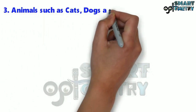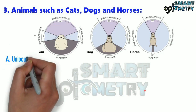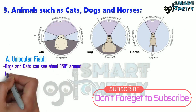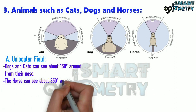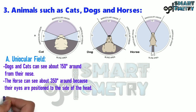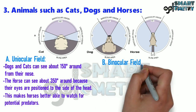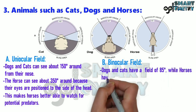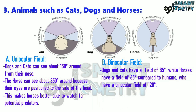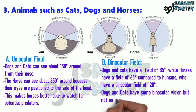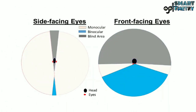Animals such as cats, dogs, and horses: Dogs and cats can see about 150 degrees around from their nose, while the horse can see about 350 degrees because its eyes are positioned to the side of the head, making horses better able to watch for predators. For the binocular field, dogs and cats have a field of 85 degrees while horses have 65 degrees, compared to humans who have a binocular field of 120 degrees. Dogs and cats have some binocular vision but not as much as humans. This picture compares the monocular and binocular visual fields of animals with side-facing and front-facing eyes.